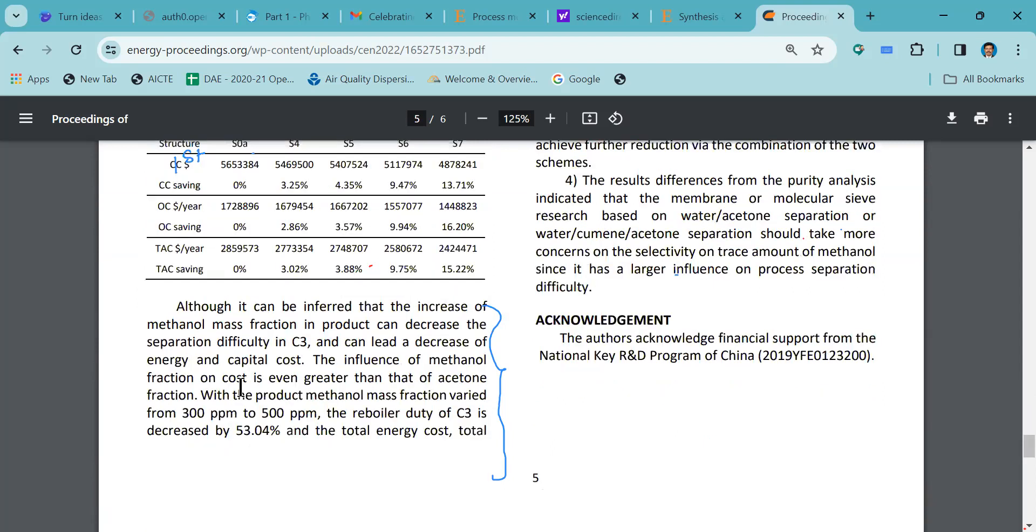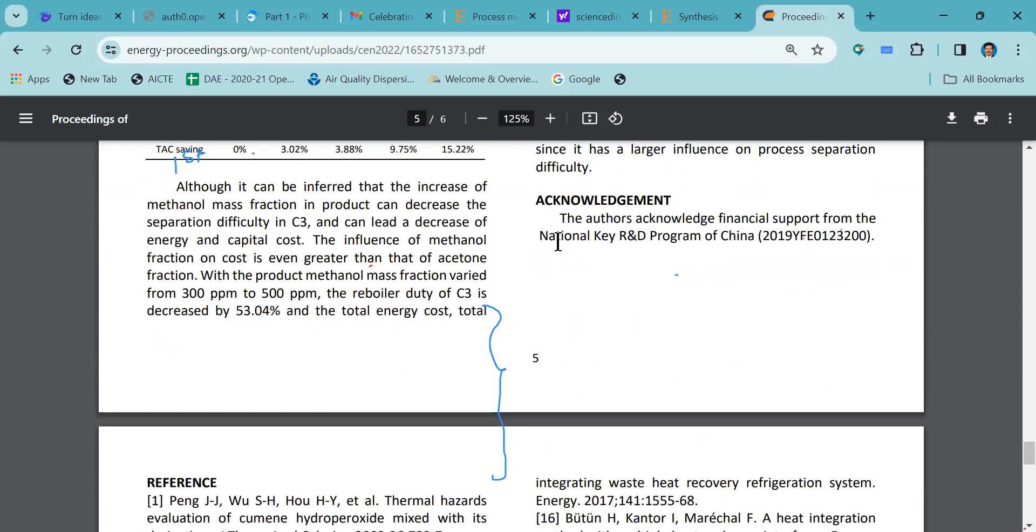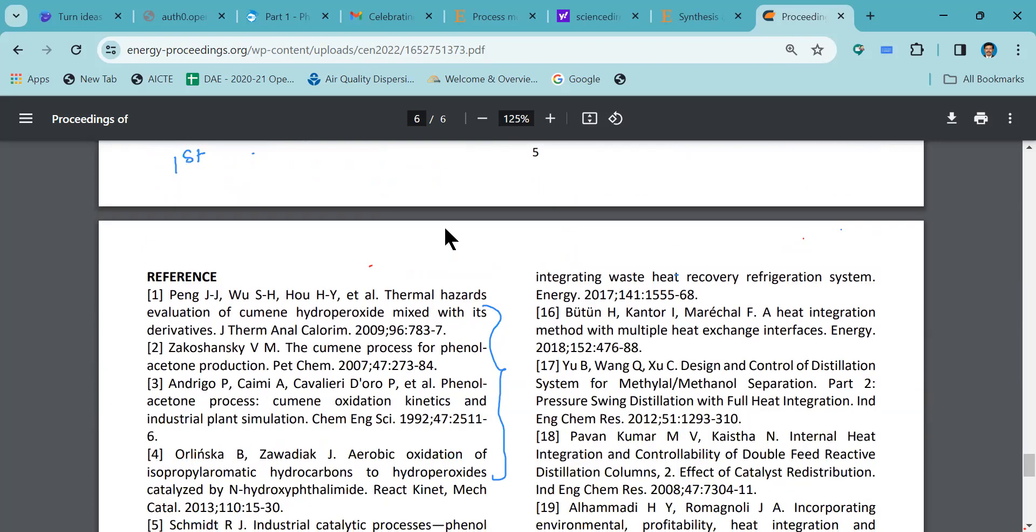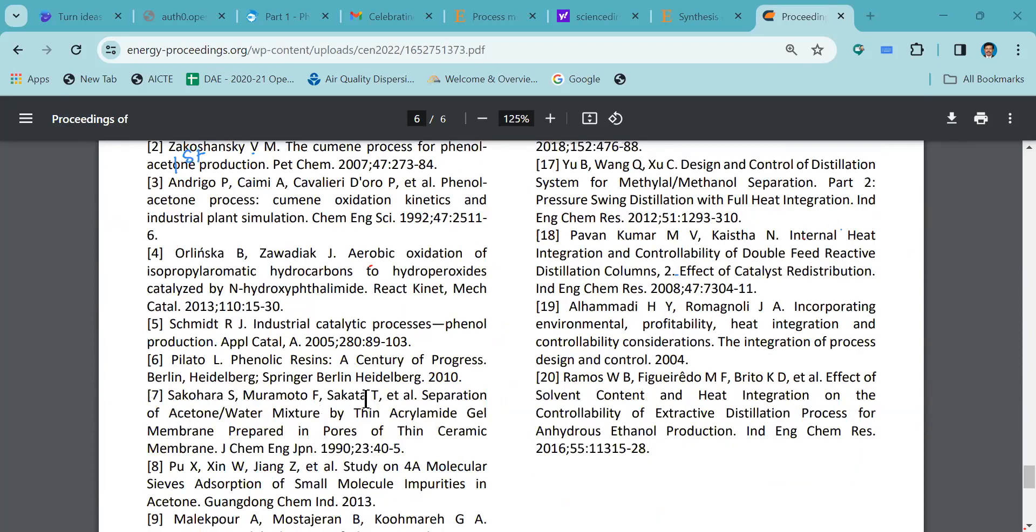After this, they have acknowledged who have contributed to this particular article. At the end, go to the references and see how the references have been used in this particular research article. What has been referred to come to this particular stage of production.